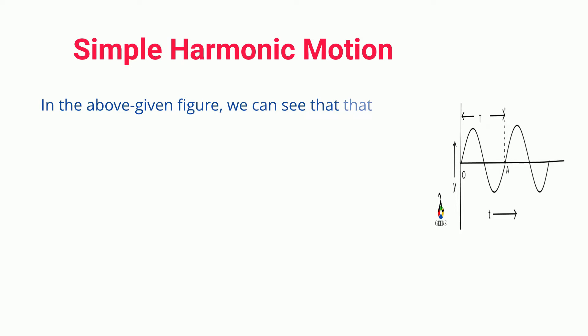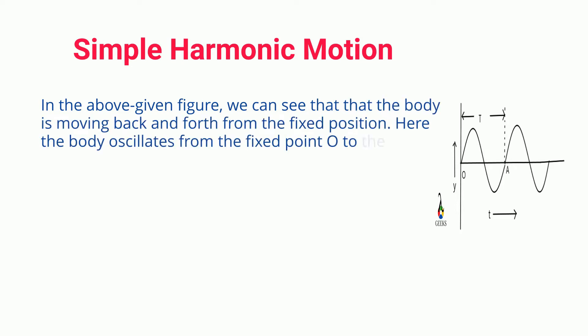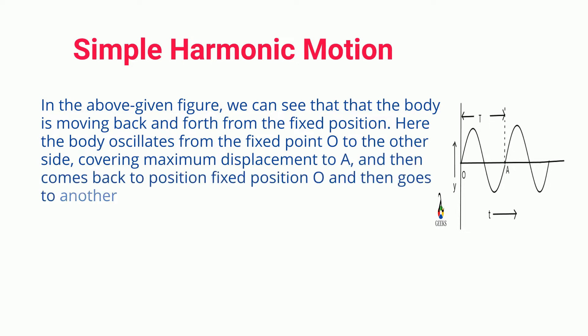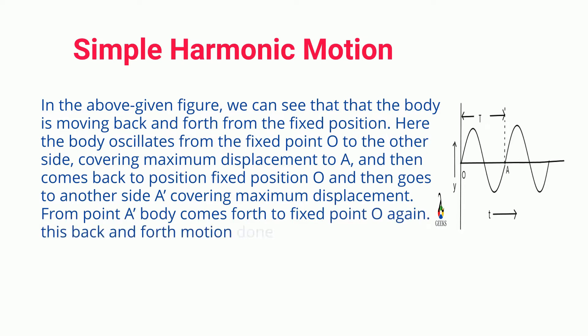In the above given figure, we can see that the body is moving back and forth from the fixed position. Here the body oscillates from the fixed point O to the other side, covering maximum displacement to A, and then comes back to fixed position O, and then goes to another side A, covering maximum displacement.